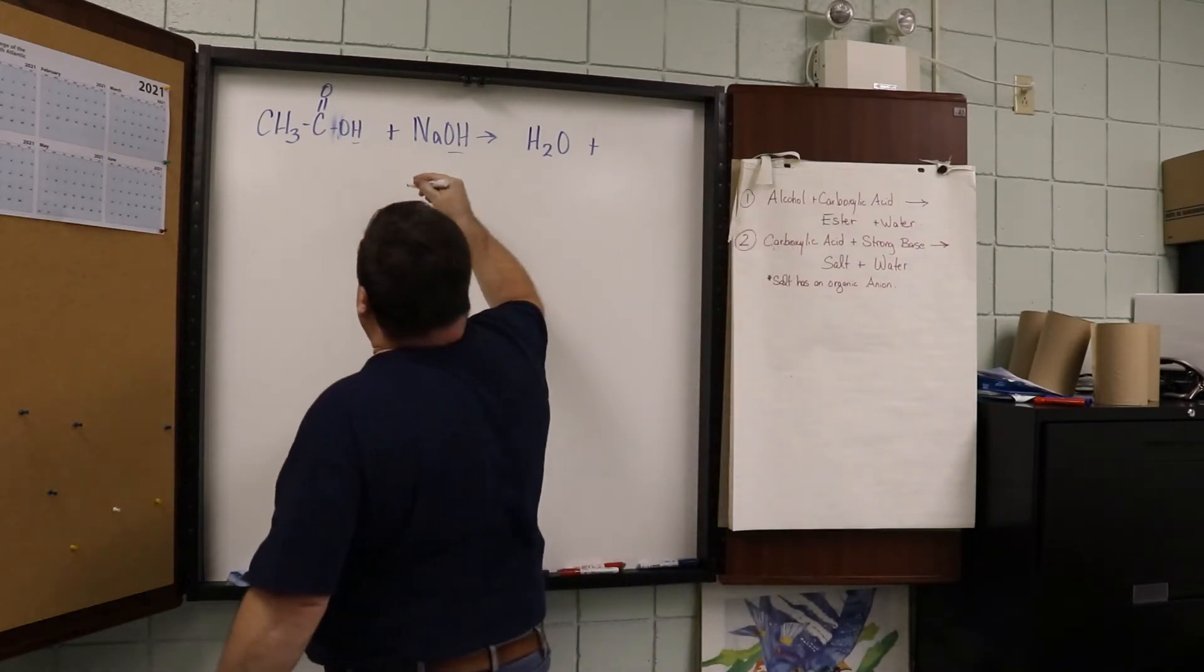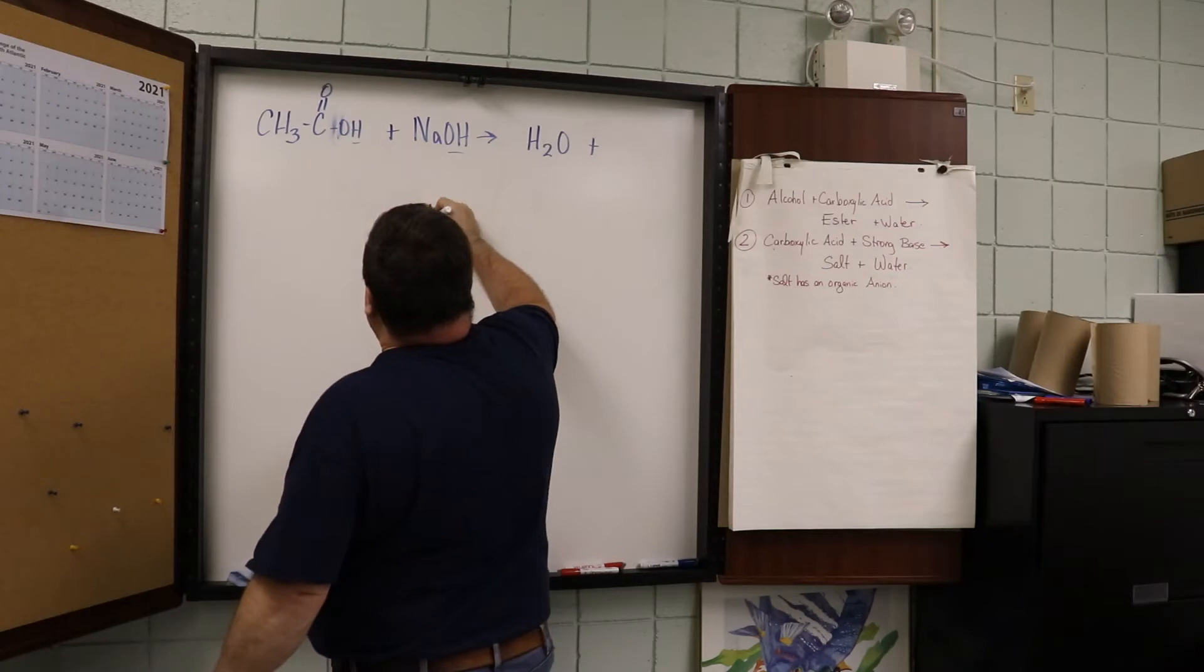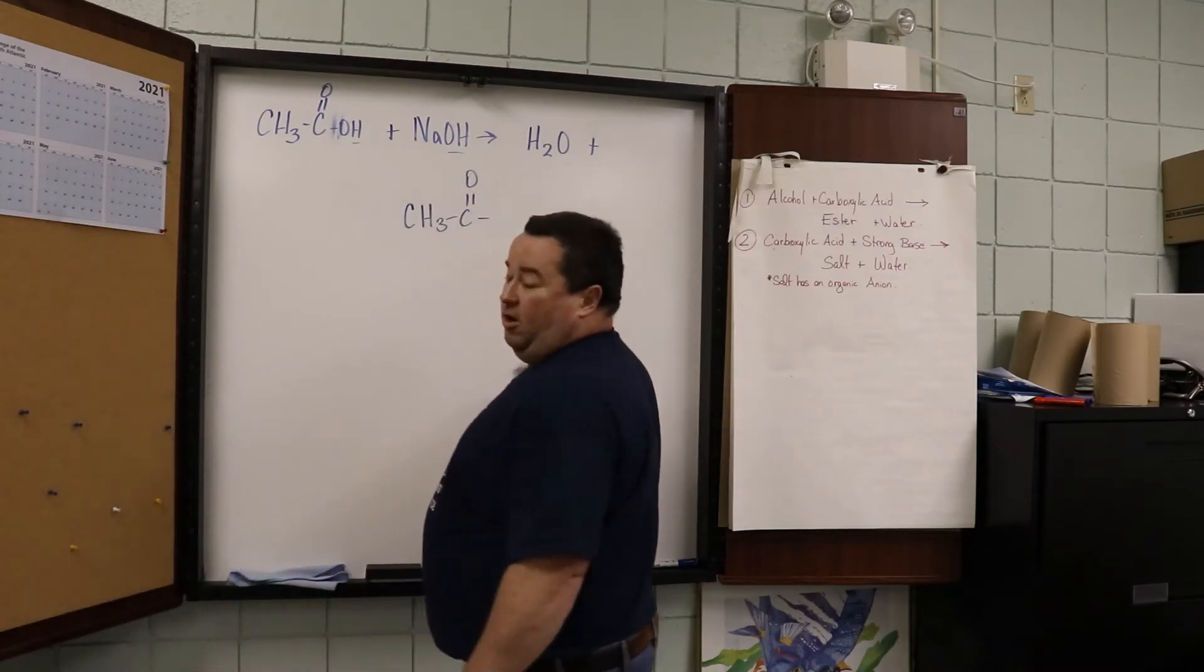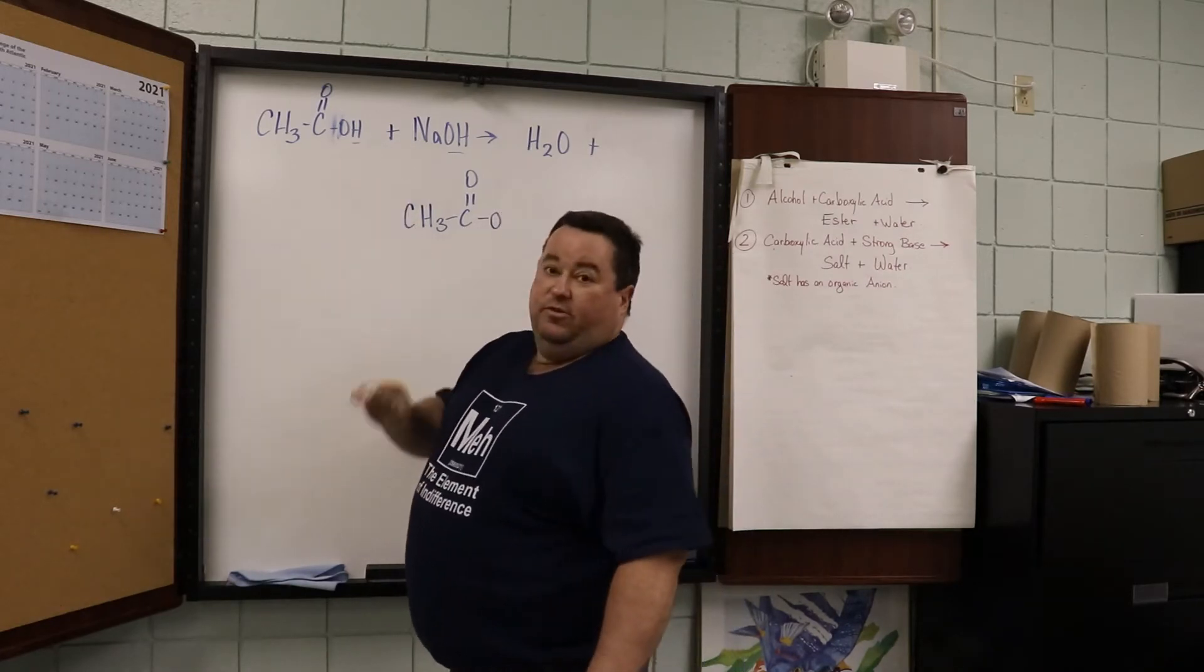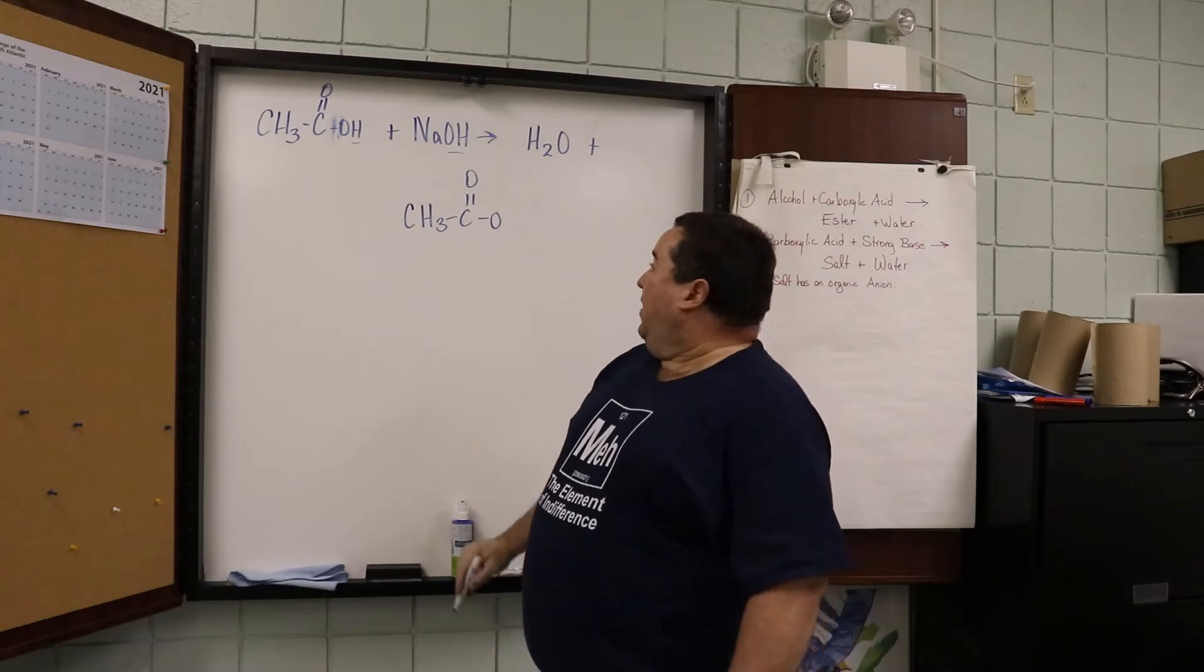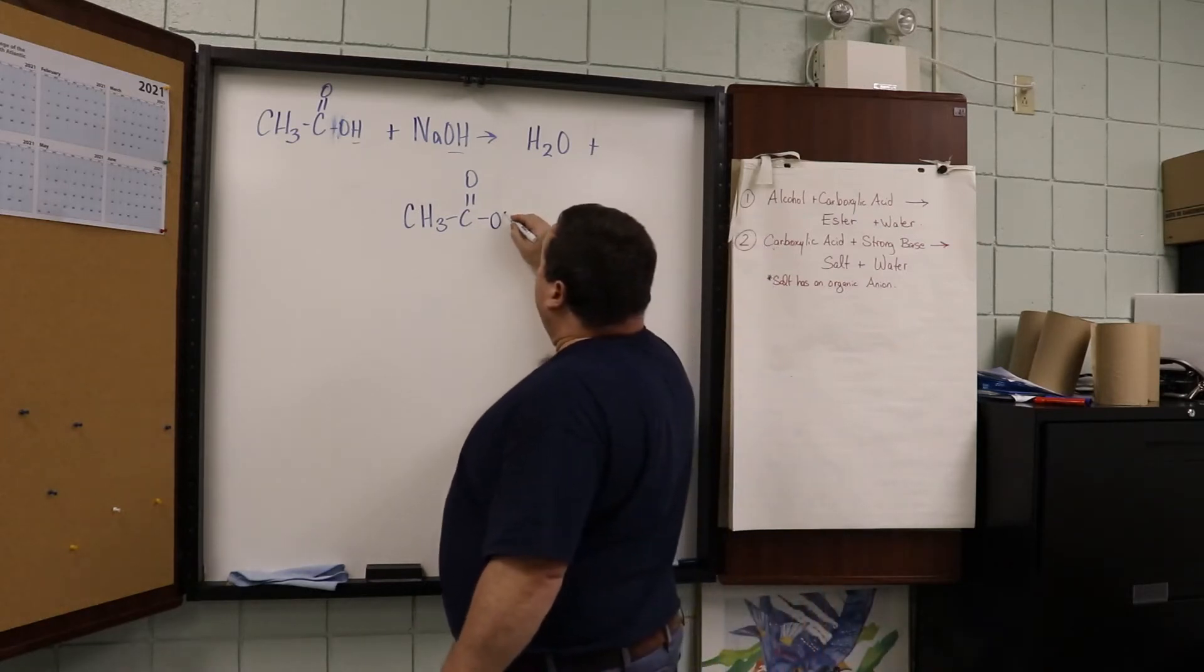The carboxylic acid remains unchanged up to the functional group. But here, where it loses the hydrogen ion, H positive, we're left behind with a negative ion.